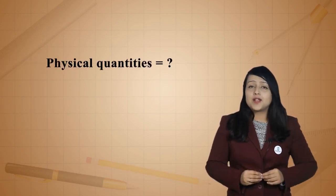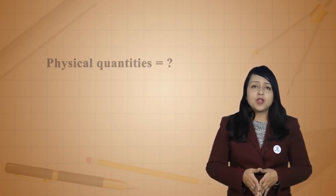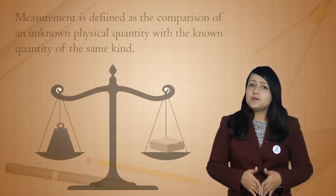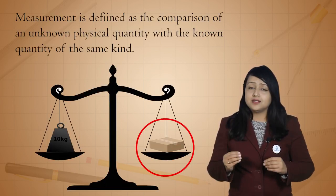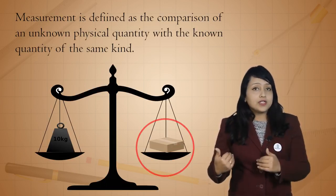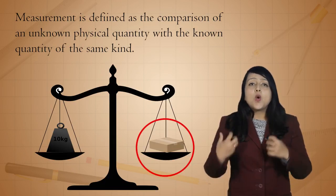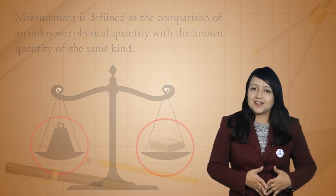Before measuring, the amount of a physical quantity is unknown. We intend to know the amount while measuring it. So, measurement is defined as the comparison of an unknown physical quantity with the known quantity of the same kind.